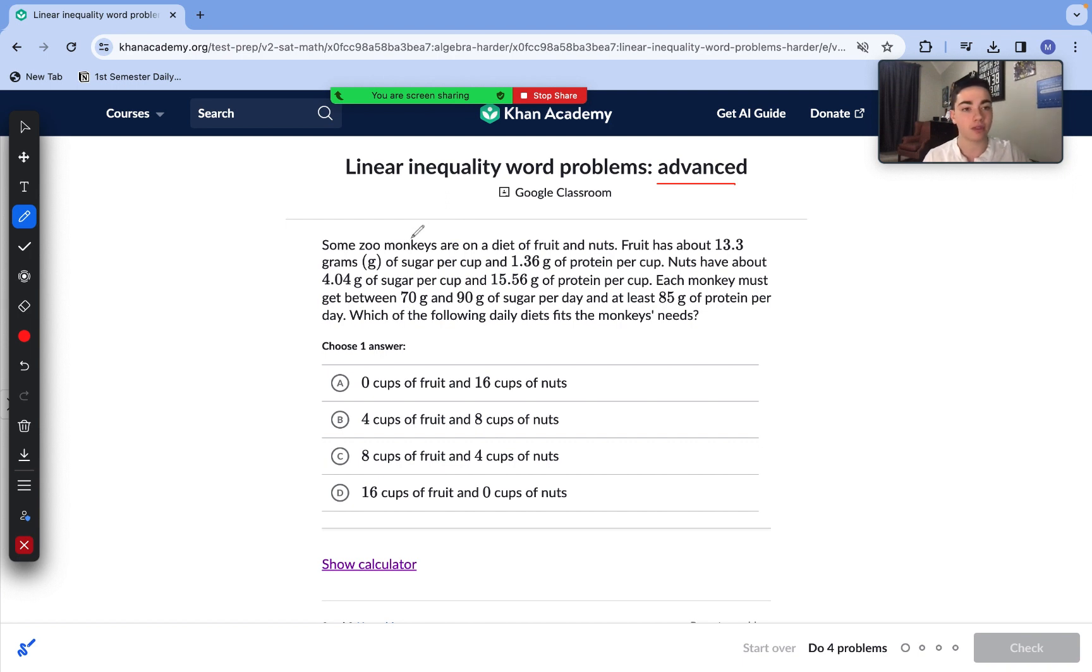So with these we might see some systems of linear inequalities which we have to solve, but of course we're still going to be looking for our keywords and key numbers. Some zoo monkeys are on a diet of fruit and nuts. Fruit has about 13.3 grams of sugar per cup and 1.36 grams of protein per cup. Nuts have about 4.04 grams of sugar per cup and 15.56 grams of protein per cup. Each monkey must get between 70 grams and 90 grams of sugar per day and at least 85 grams of protein per day.